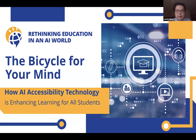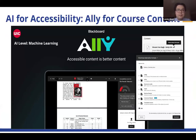Ally does two things. It generates alternative accessible formats for students using advanced machine learning algorithms, and it provides feedback to instructors about the accessibility of their course content.